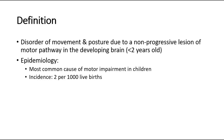Regarding the epidemiology, the most common cause of motor impairment in children is Cerebral Palsy, and the incidence is around 2 cases per 1000 live births.